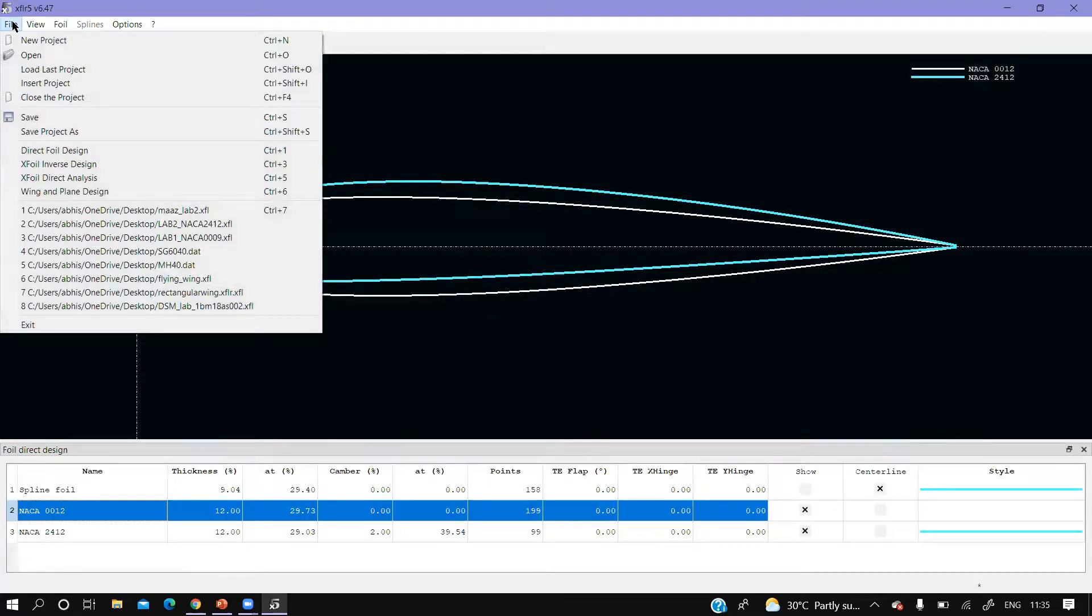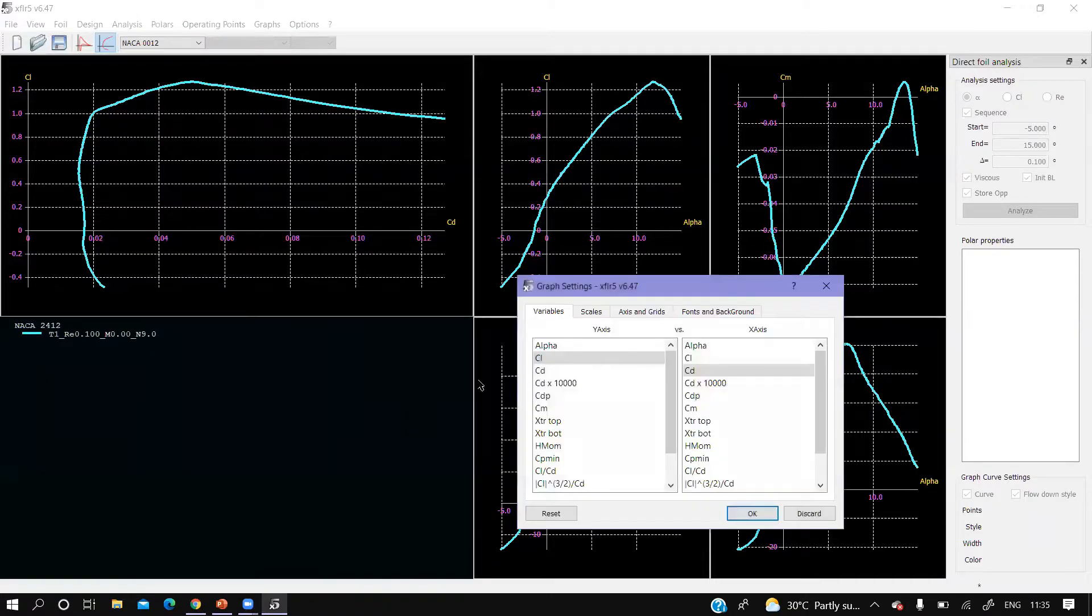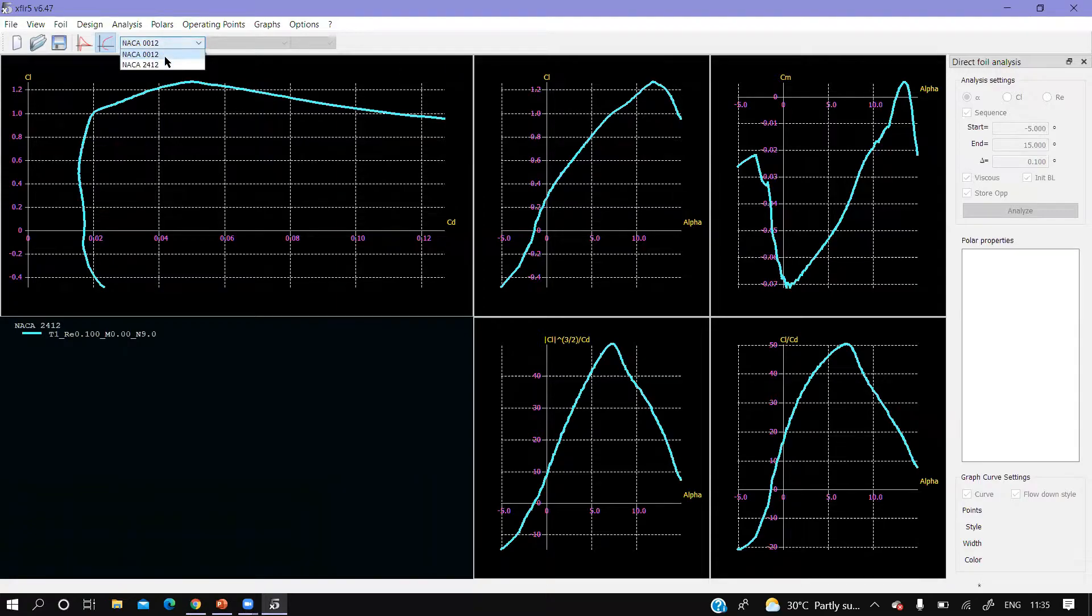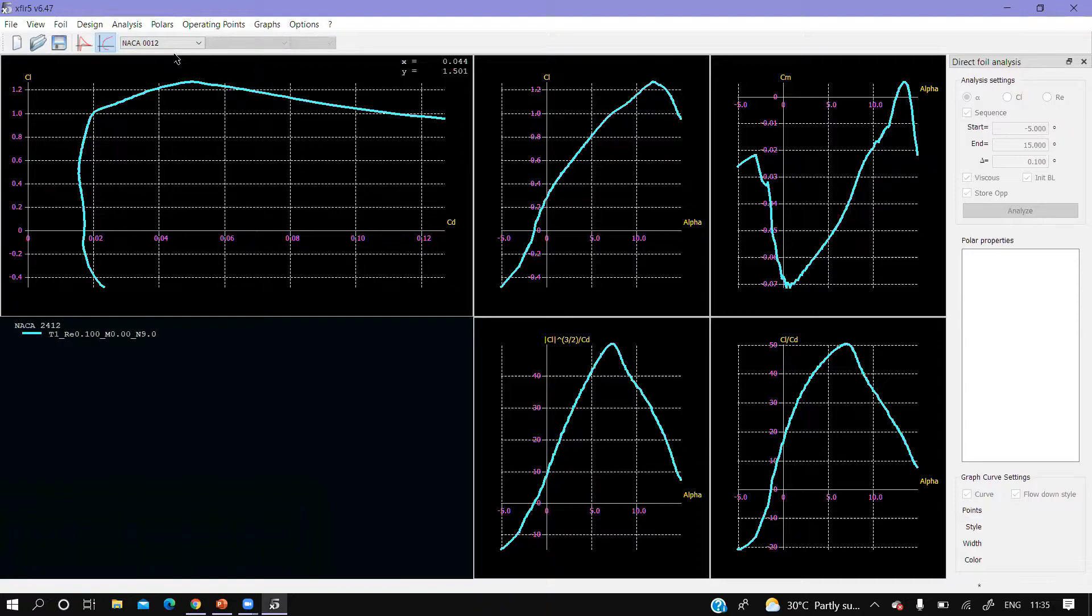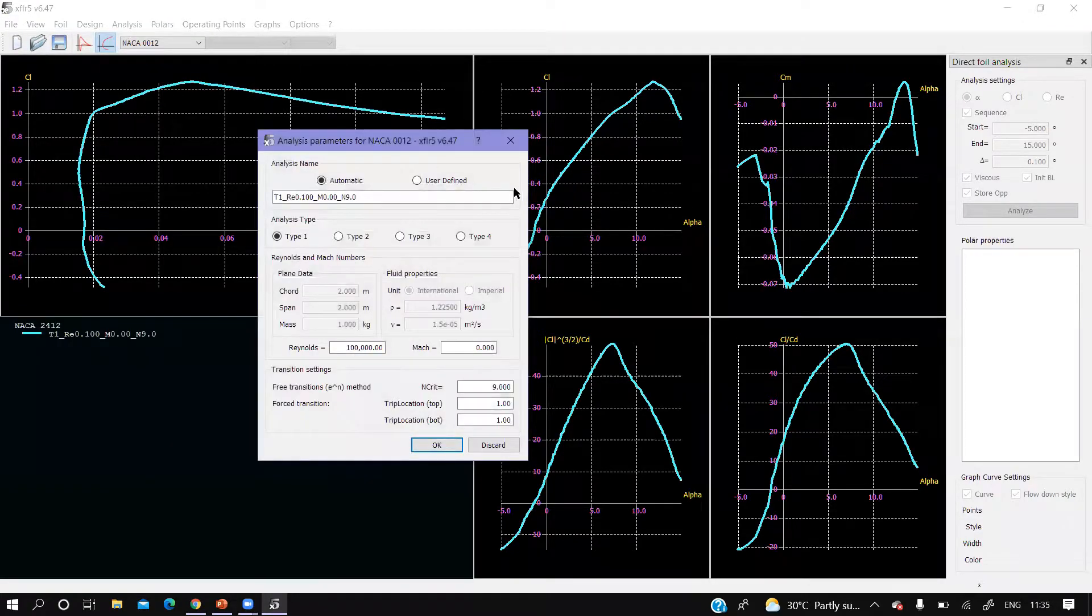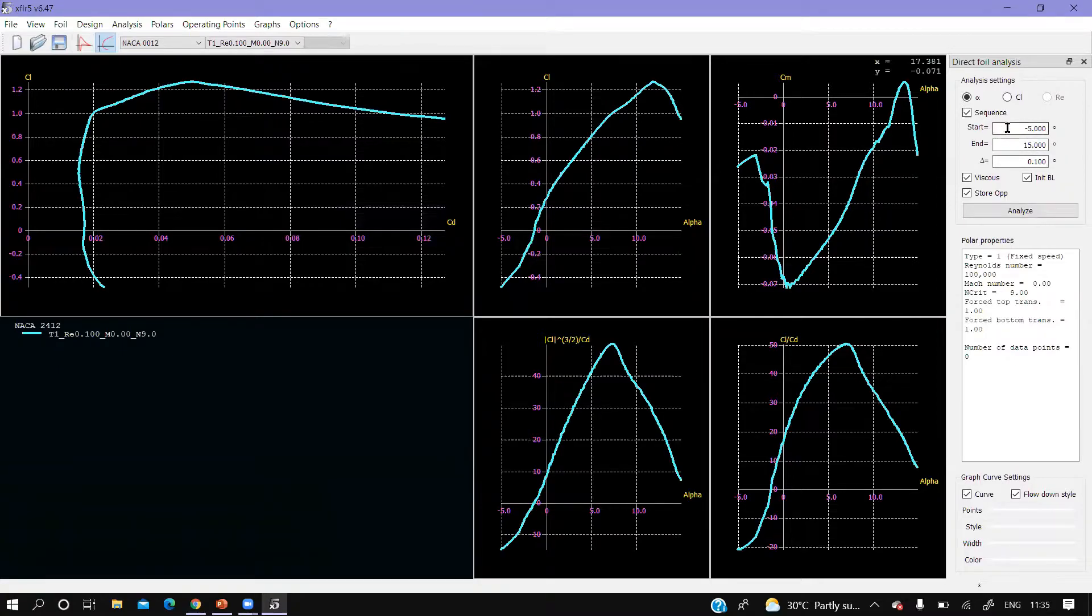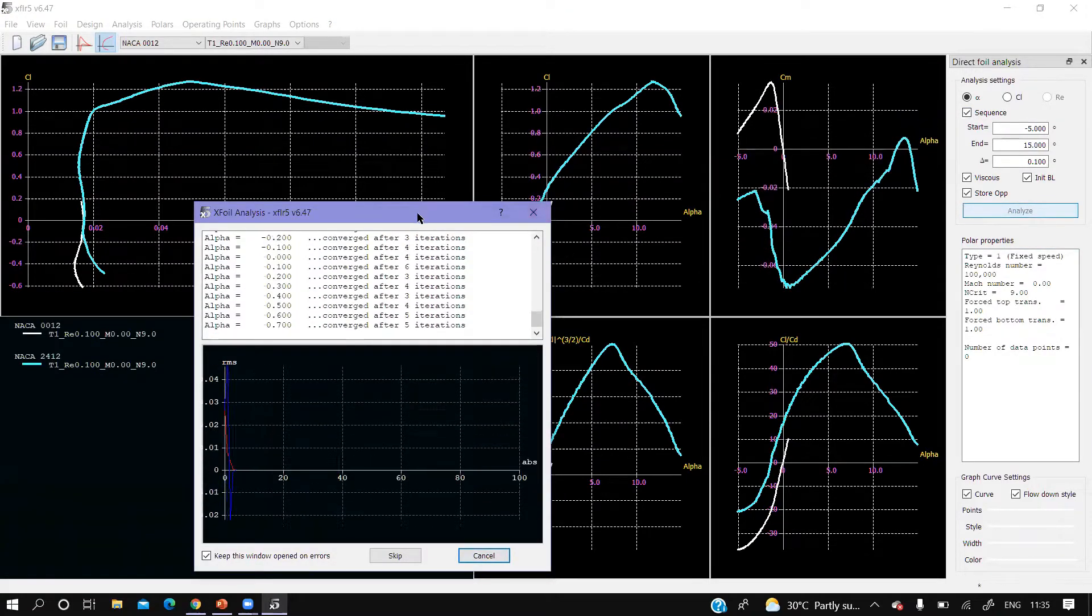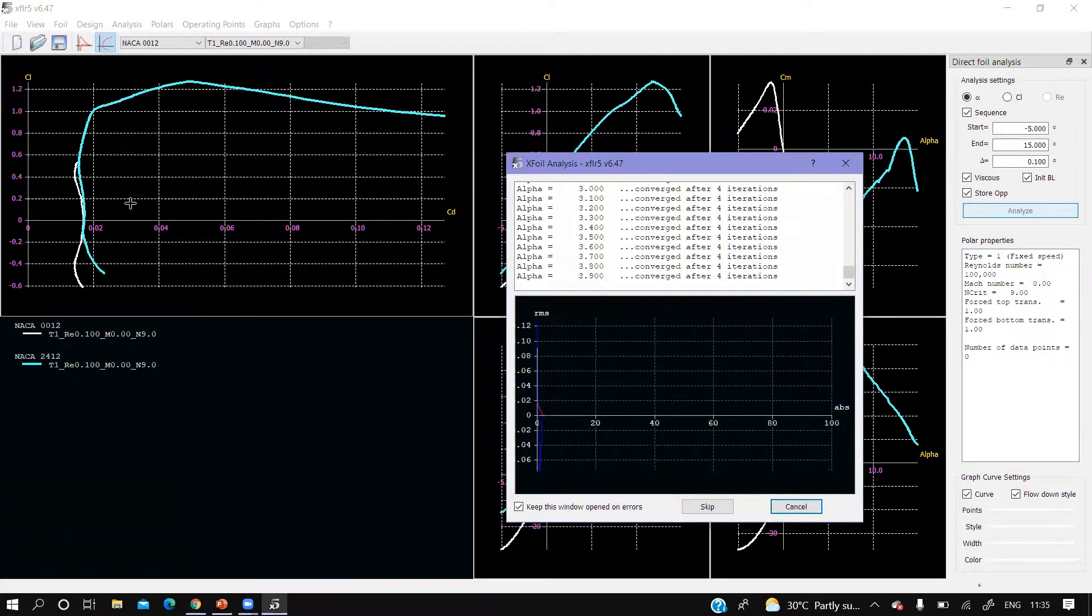Now go to XFLR direct analysis. The airfoil you can choose - now it is NACA 0012. Analysis, define analysis with the same Reynolds number 1 lakh, everything the same. Analyzing from minus 5 to 15 degrees, everything the same. Then analyze. We're going to concentrate on CL versus CD curve.